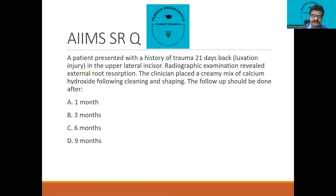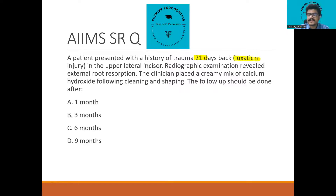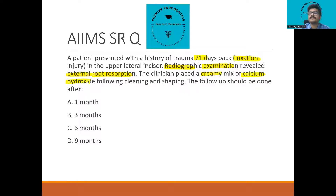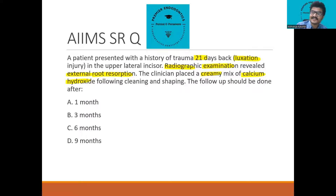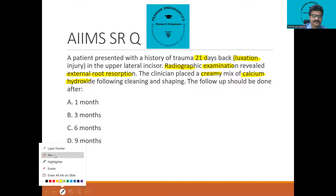Let us mark each concept. There is a history of trauma 21 days back — this 21-day duration is a very important point in terms of treatment protocol, as the entire treatment protocol changes according to duration. This was a severe luxation injury, because the examiner has told us that on radiographic examination we could see external root resorption. Then there is the mention of a creamy mix of calcium hydroxide, which is going to give us the hint that directs us towards the answer.